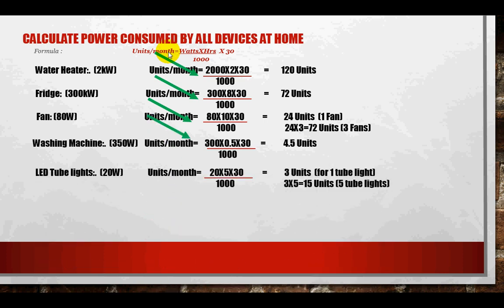Next are tube lights or LED lights. At 20 watts, used for 5 hours per day over 30 days, each tube light consumes about 3 units. If you have five tube lights in your house, the total comes to 15 units. Note that I have taken 5 hours as an ideal condition — evening to night. In a typical urban apartment with limited sunlight, usage could be 10 to 12 hours.